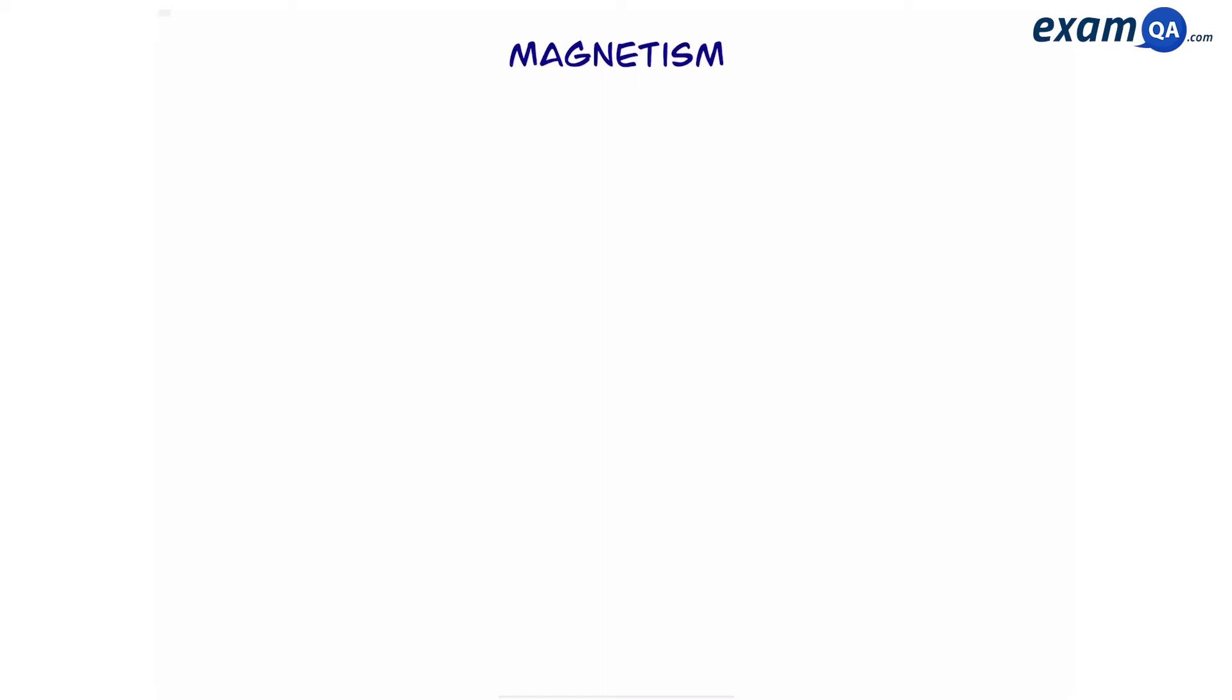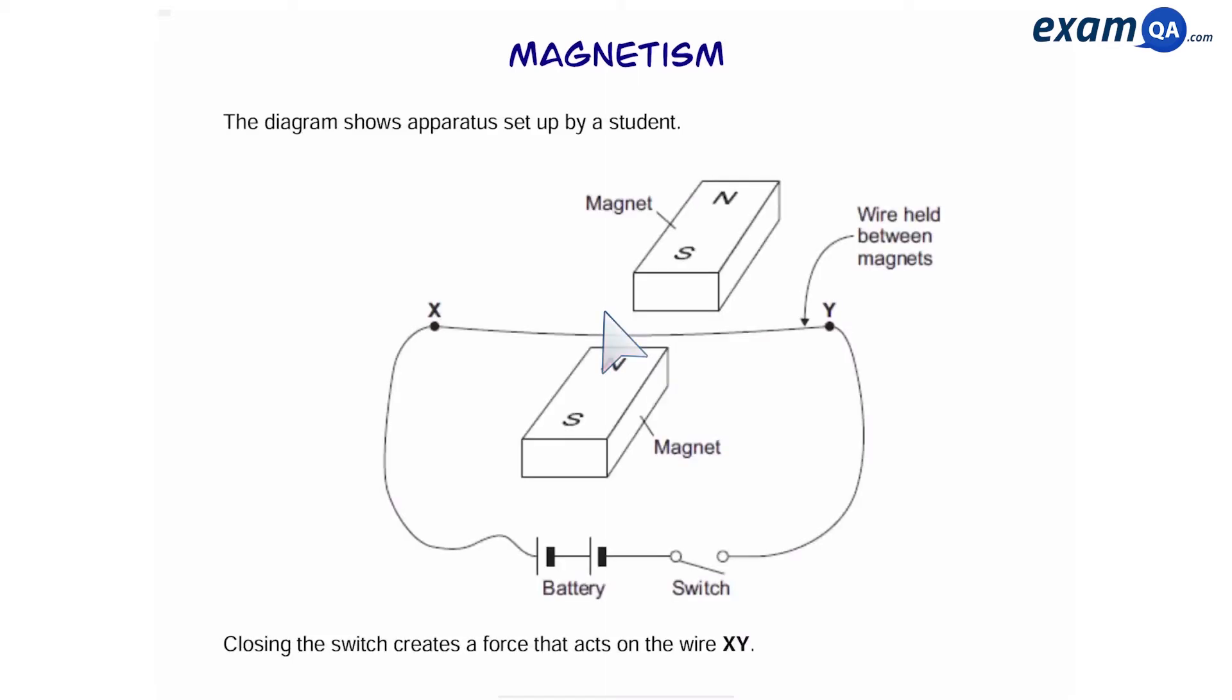Here's another exam style question on magnetism. The diagram below shows an apparatus set up by a student. We can see here we have two different magnets and between them in the empty space there's a wire.